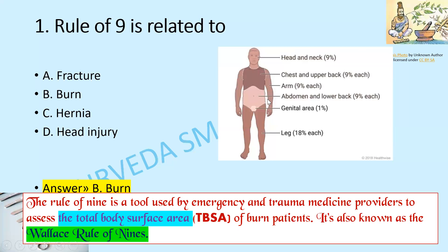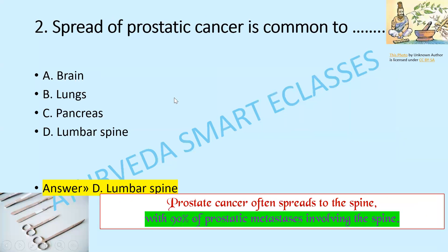This is the picture representing the rule of 9. Next question: spread of prostatic cancer is common to which part — rib, lung, spleen, or lumbar spine? The answer is option D, lumbar spine. Prostate cancer often spreads to the spine, with 90% of metastases involving the spine.